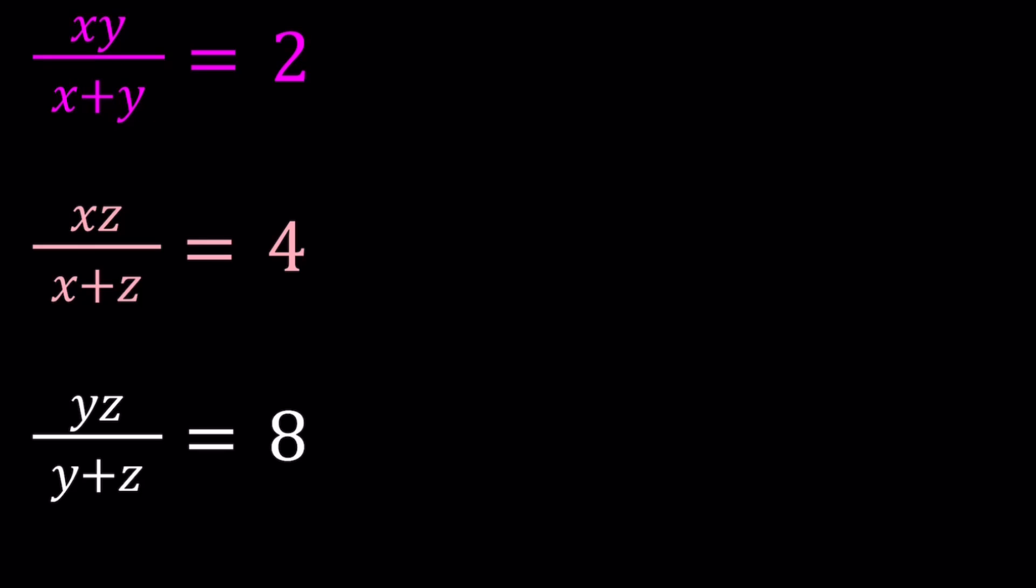When you look at an equation like this, one of the things that you should probably think about is cross-multiplication. So, what happens if I cross-multiply? I get xy equals 2x plus 2y, and then I get xz, which is the product again, equals 4x plus 4z, and yz equals 8y plus 8z.